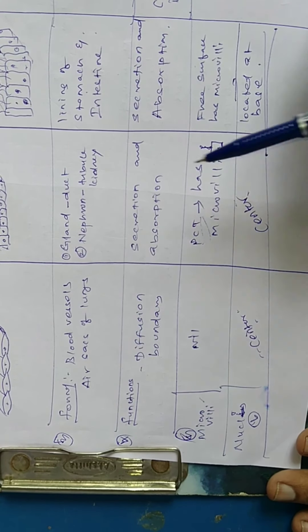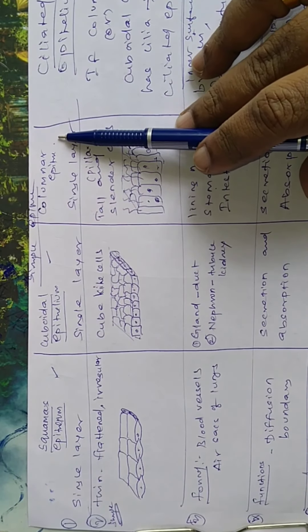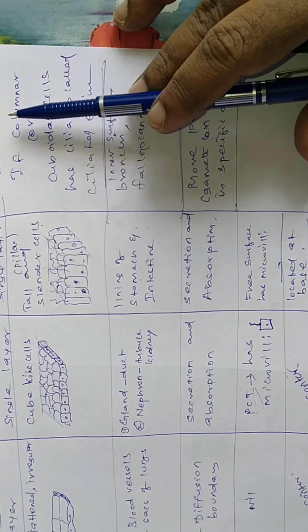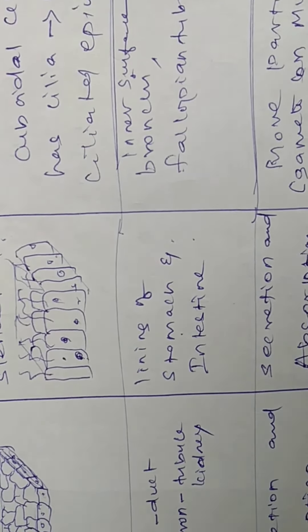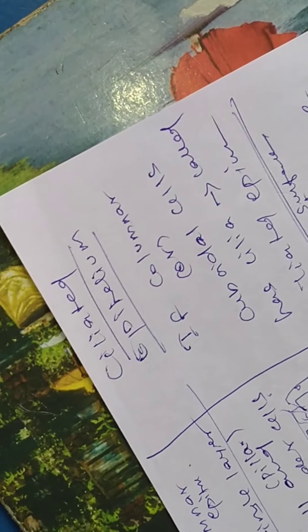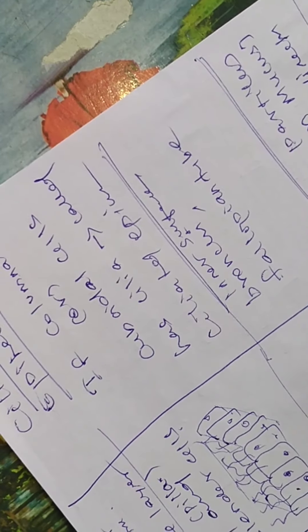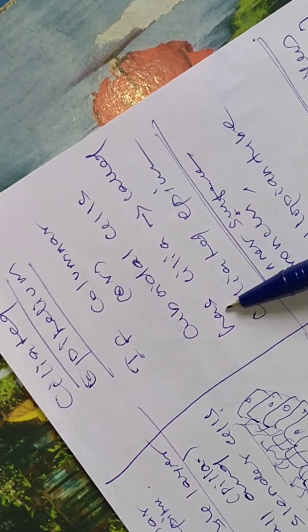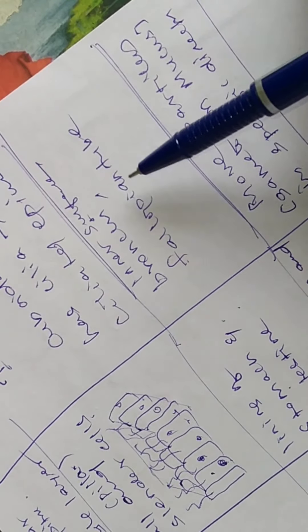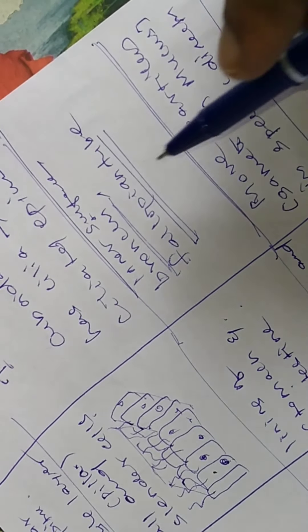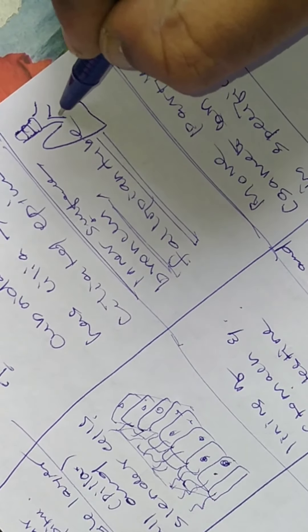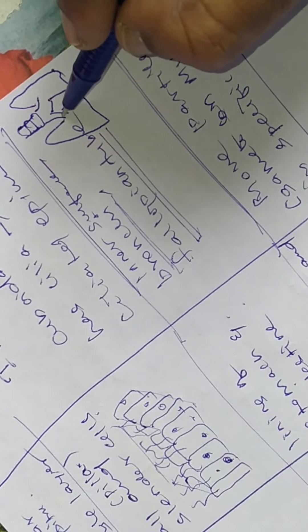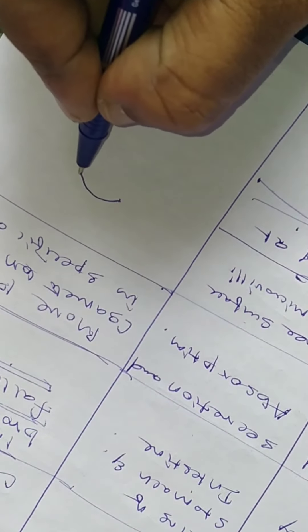One more type is present in epithelial tissue — ciliated epithelium. In the case of ciliated epithelium, if the columnar cell or cuboidal cell has cilia, that is ciliated epithelium. It is present in the bronchi as well as the fallopian tube. The trachea divides into right bronchi and left bronchi, each entering the lungs. Within the bronchi, cilia are present. The fallopian tube is a female reproductive organ.